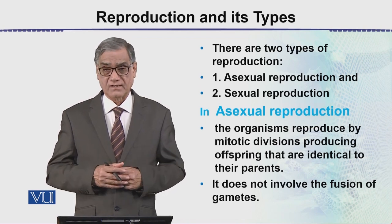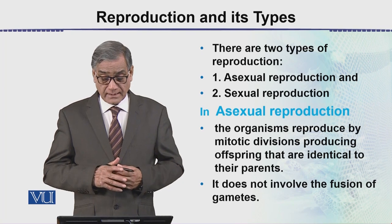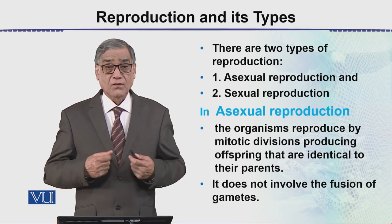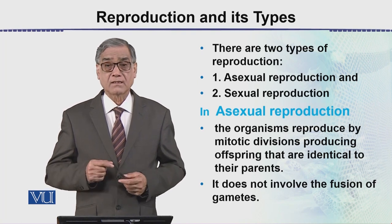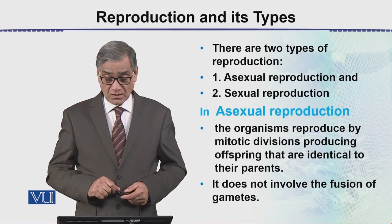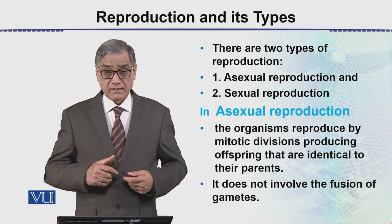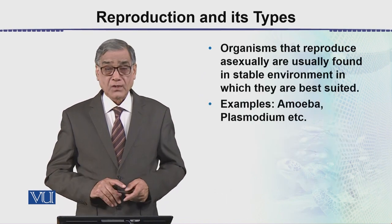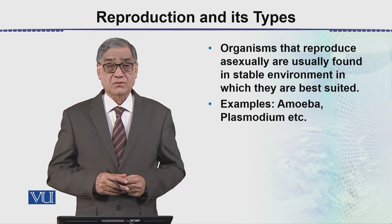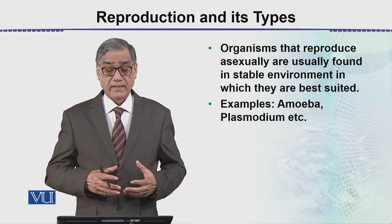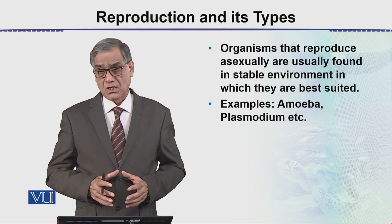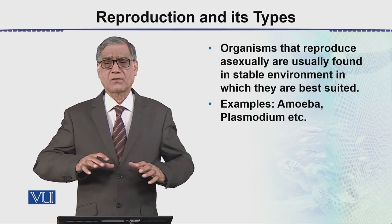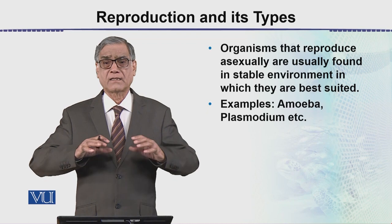There are two types of reproduction. In asexual reproduction, organisms reproduce by mitotic division, producing offspring that are identical to their parents. It does not involve the fusion of gametes. Organisms that reproduce asexually are usually found in a stable environment in which they are best suited.